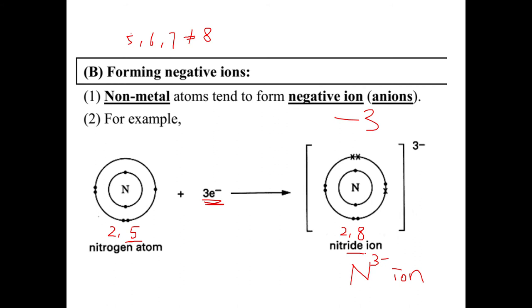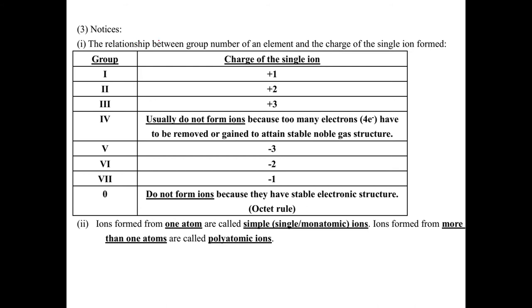For the relationship between group number of the element and the charge of the single ion formed: Group 1 charge is plus 1, Group 2 plus 2, Group 3 plus 3. Group 4 will not be positive 4 because usually do not form ions because too many electrons have to be removed or gained to attain stable noble gas structure.